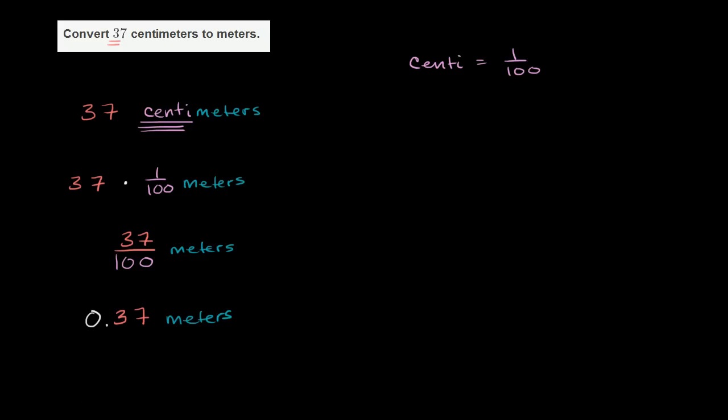Another way that you could have thought about this is, look, I'm going to go from centimeters to meters. I need 100 centimeters to get to 1 meter. So I'm going to have to divide by 100 in order to figure out how many meters I have.